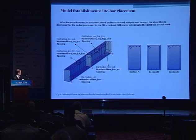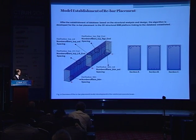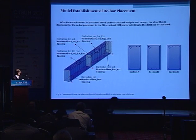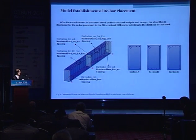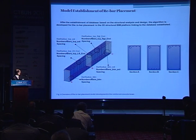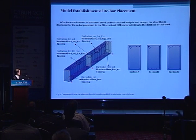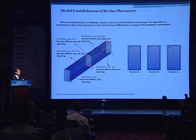Here is one example of the BIM development. From the database, we use all the geometry information of the concrete. We then define the coordinates of the starting point and the ending point of the reinforcement bar using parametric technology. So we can define how to build a model in the 3D structural BIM tool.